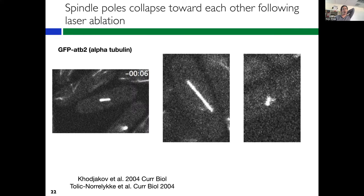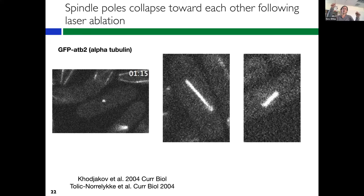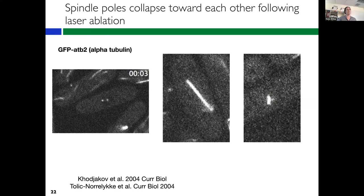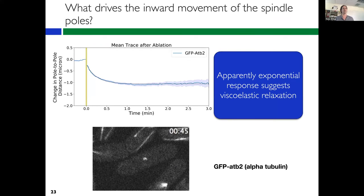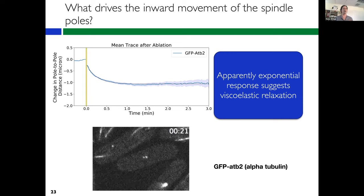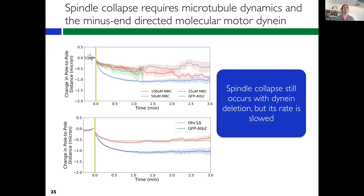Our first hint that nuclear relaxation wasn't the explanation came from movies where the spindle collapses but the two poles seem to go around toward each other in a way that doesn't make sense from purely mechanical relaxation of the nucleus as a whole. When we look at pole-to-pole distance over time, we see an exponential response consistent with viscoelastic relaxation, which matched the prior hypothesis. However, from data I don't have time to show today, it does not appear that the chromosomes within the nucleus or envelope relaxation are driving the inward movement of the spindle poles. We therefore started to consider whether it might be an active microtubule motor-based transport, and we do see data that suggests that's the case.